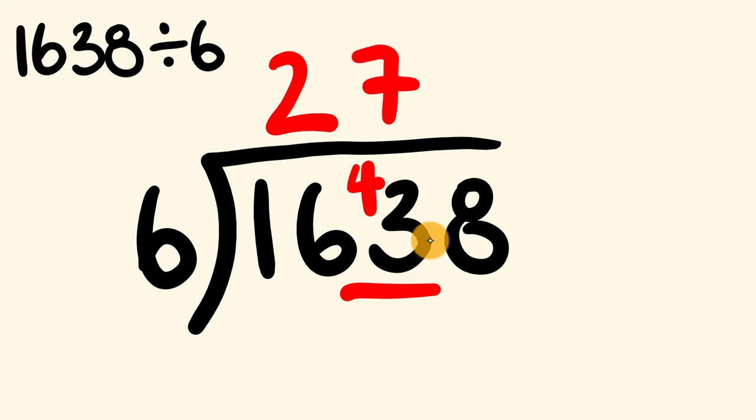7 sixes are 42. So how many left over? 42 taken away from 43 is equal to 1. So we carry that now to the next number. Finally we have how many times does 6 go into 18? 6 goes into 18 three times. So we put that right up there. We have 0 in the remainder. Therefore we have our answer. 1,638 divided by 6 is equal to 273.